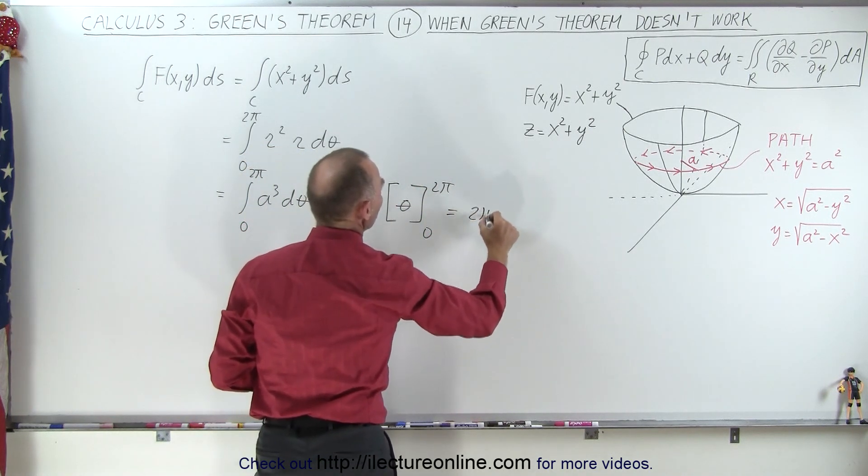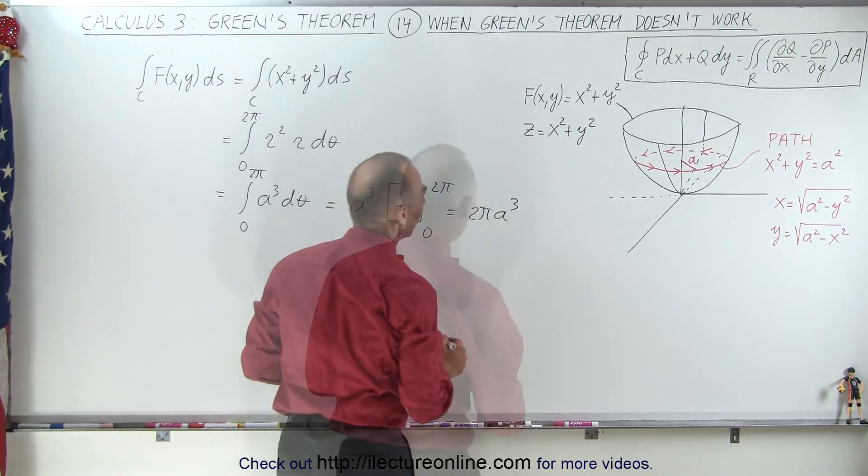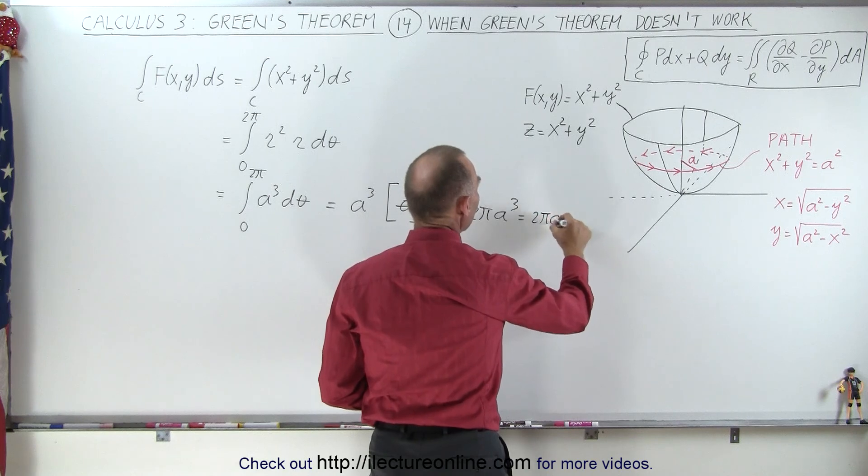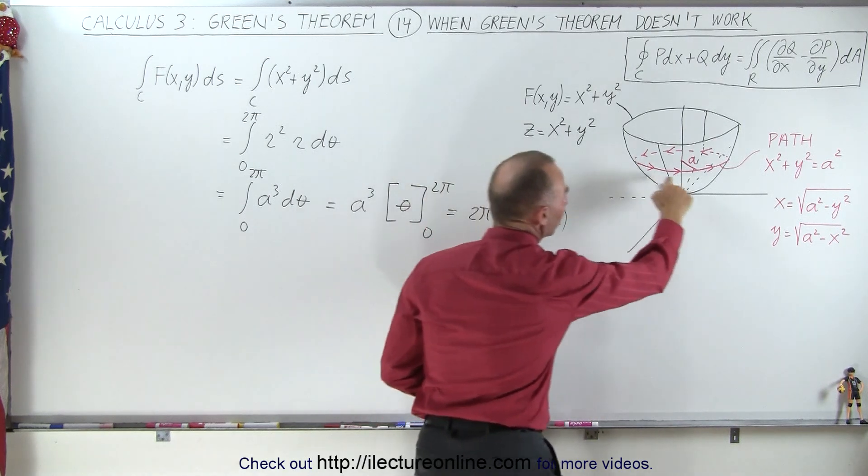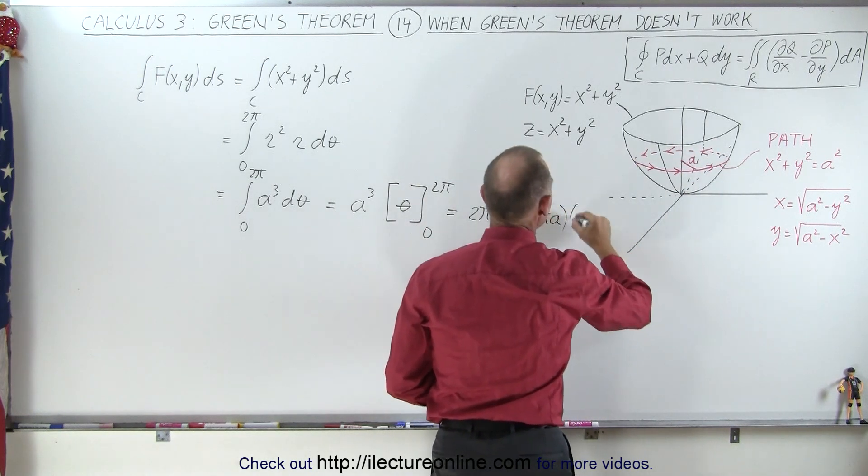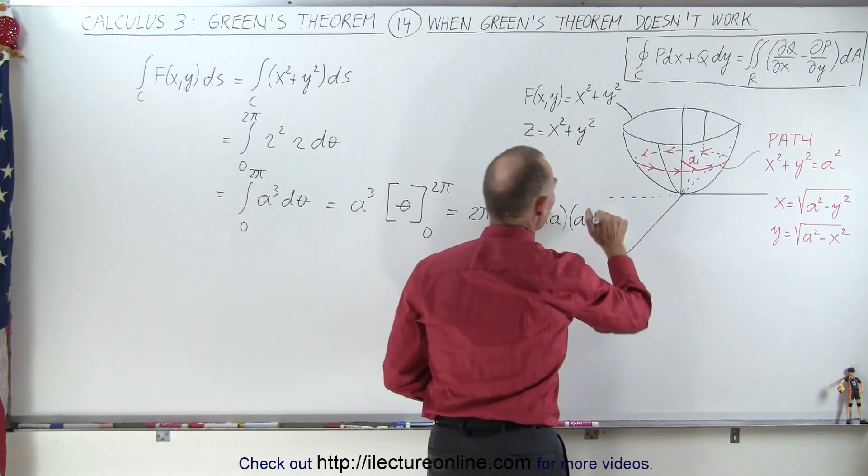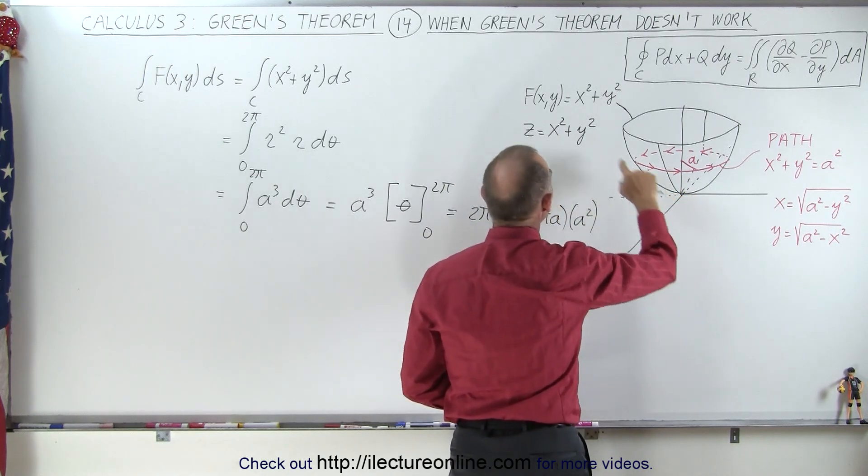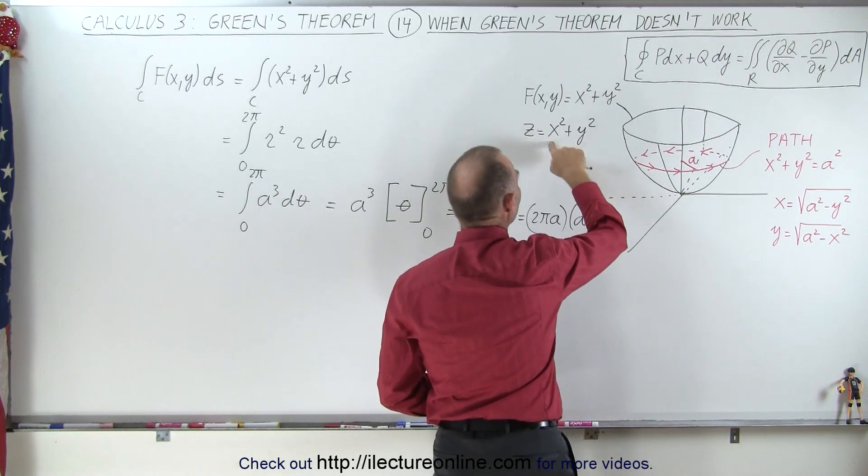Which would be equal to 2 pi a cubed, or this could be written as 2 pi a, which would be the circumference of the path taken, times a squared, which would be equal to the height above the xy plane.